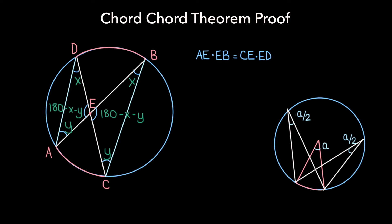In similar triangles, we know that the sides opposite the same angle must be in the same ratio. So the ratio of the sides opposite angle X in each triangle, so AE over CE, must be equal to the ratio of the sides opposite angle Y, so ED over EB.